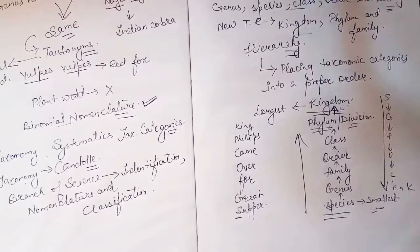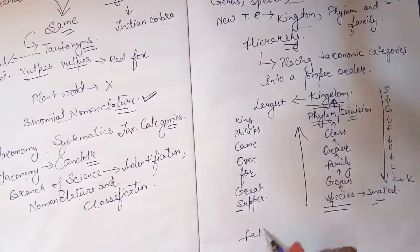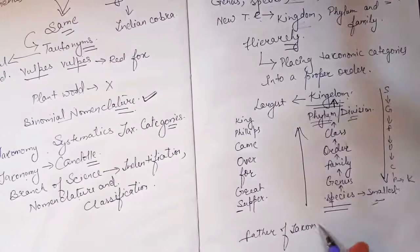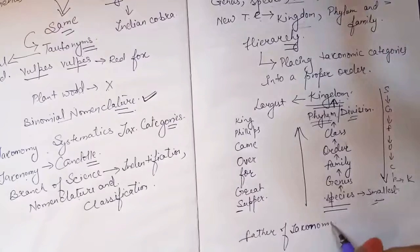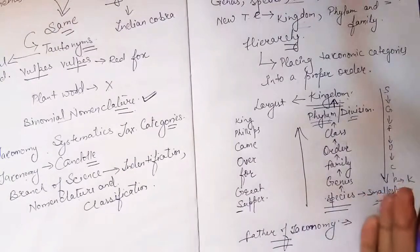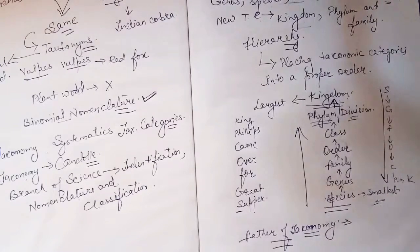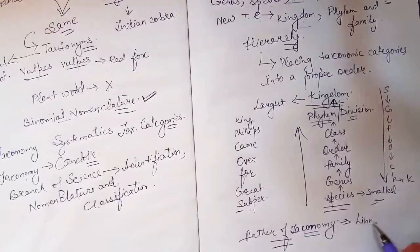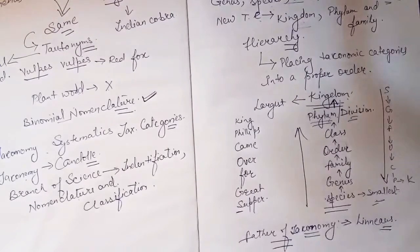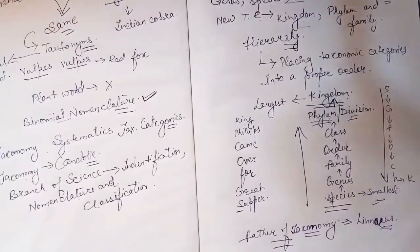There are many other mnemonics to learn the order of these taxonomic categories. One important thing we should know is the father of taxonomy. Since we are studying taxonomy and taxonomic categories, who is the person behind this term? The father of taxonomy is Linnaeus.